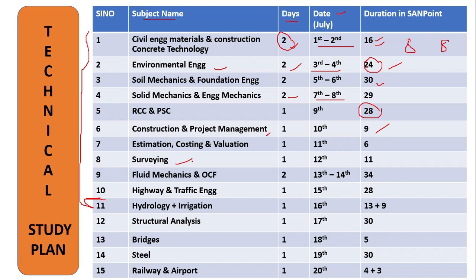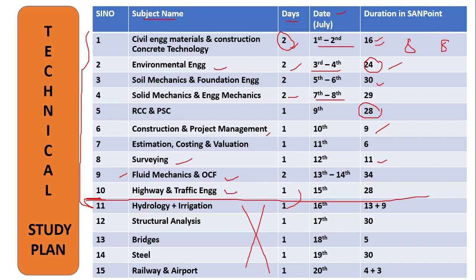Next subject is Surveying — a very easy subject, again only one day, and only an 11-hour course in our institute. Important topics are: chain surveying, compass surveying, leveling, contours, plane table, theodolite, curve setting, remote sensing, and GIS. Next comes Fluid Mechanics and Open Channel Flow. The first 10 core subjects you should mark and study each and everything; if you want to skip others you can add the remaining days here. Important topics are: properties of fluid, Bernoulli's equation, dimensional analysis, hydraulic jump, centrifugal pumps, and manometer calculations.